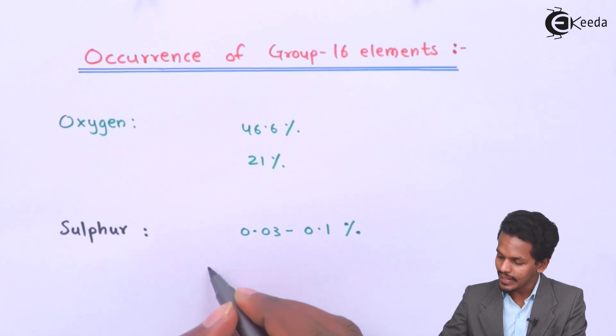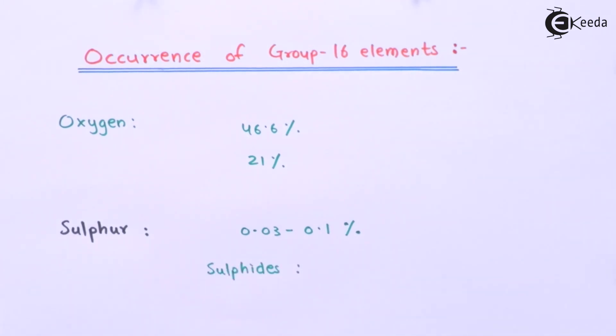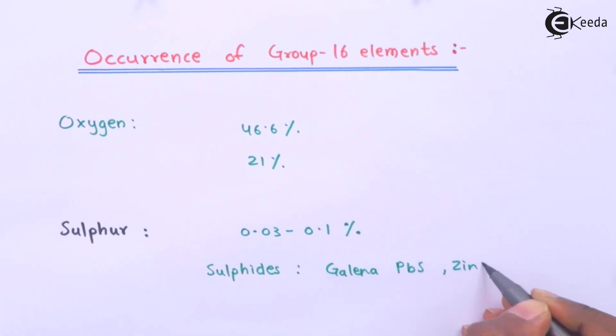If I am talking about sulfides, the common examples that we know are galena, which is written as PbS, and zinc blende, that has the molecular formula ZnS. Therefore, these are sulfides.